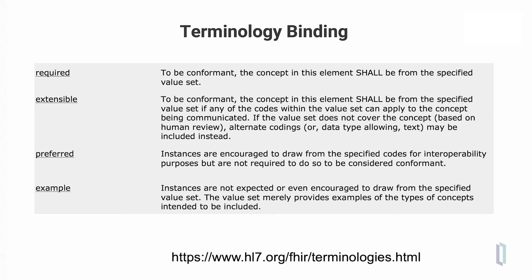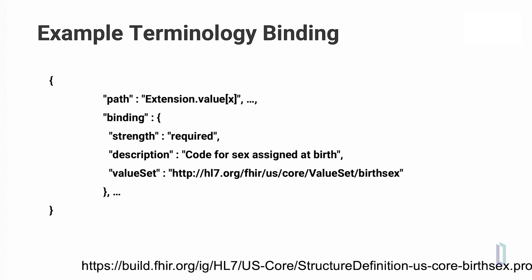In addition to the concept of value sets, an important aspect of terminology in FHIR is the binding strength. A data element is bound to a particular value set and the strength of that binding varies: from required, meaning you must use that value set and cannot select codes outside of it; to extensible, meaning you are given a set of codes but you can add to that value set; or preferred, where there are codes provided but you might choose an alternative code; or example binding, where a limited example value set is provided. An example of terminology binding would be the value set for birth sex in HL7 FHIR, where the strength of the binding is required, and the description of that data element is the code for sex assigned at birth.